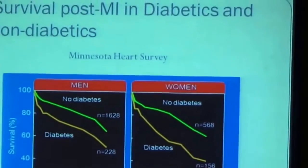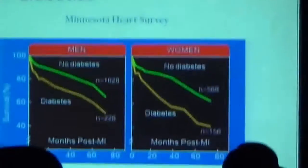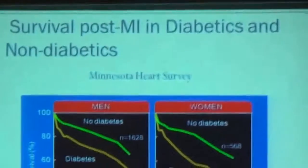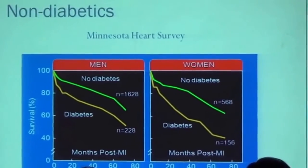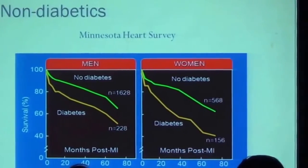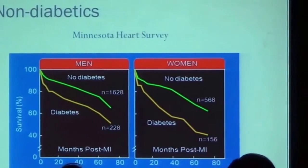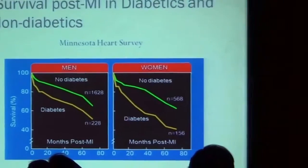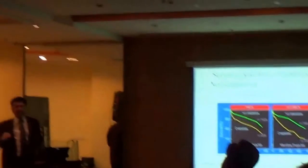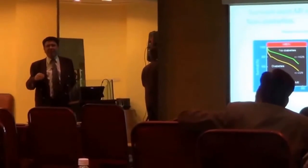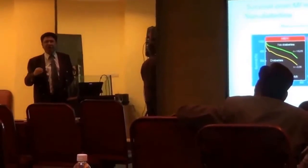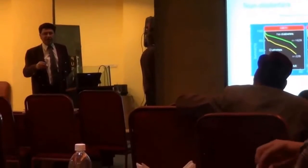Not only that, if a diabetic man suffers from MI and a diabetic woman suffers from MI, there are greater chances that the diabetic woman would die early, making post-MI prognosis worse for diabetic women.